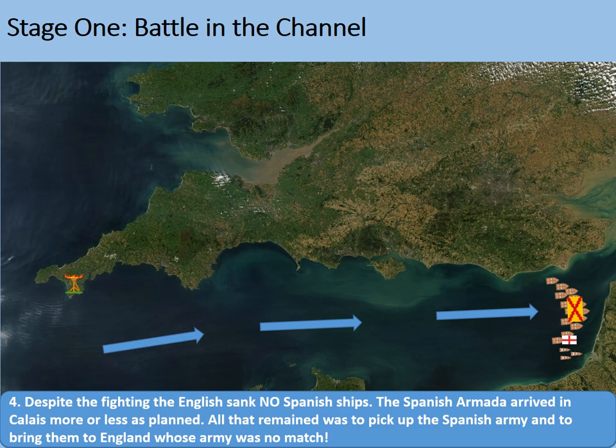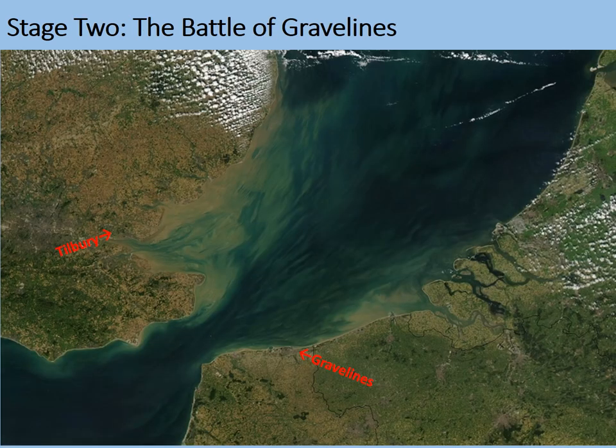Stage two: the Battle of Gravelines. Two more locations are added to the map. First, Tilbury — on the Thames estuary on the Essex side. The other is Gravelines, just to the east of Calais, where it was agreed that the Spanish would pick up their army to invade England. The Spanish Armada wasn't going to invade England itself — it was merely the armed transport to bring a Spanish army over to get rid of Elizabeth I.